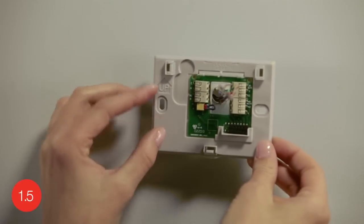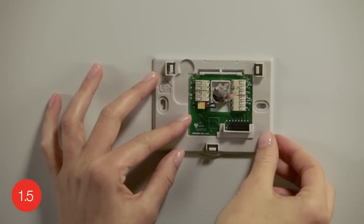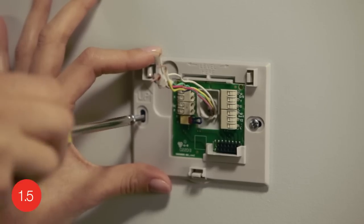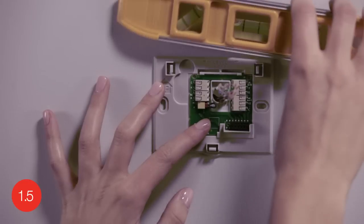Position it so the wire hole is centered and pull the wires through the hole. Now is a good time to verify if it is level.